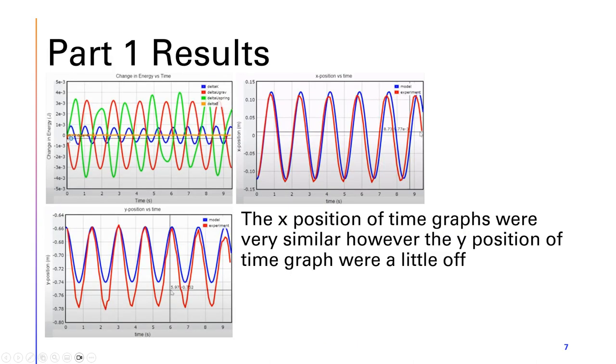Moving on to the results of the experiment, we could see that the orange line is the delta E, which is the change in energy. The delta E is zero, which is what we wanted. We also see green and red lines, which are the potential spring energy and potential gravitational energy. They're in opposing sides, which is what we want as they cancel out.